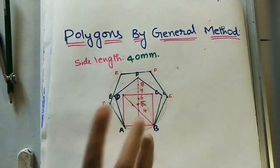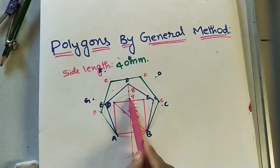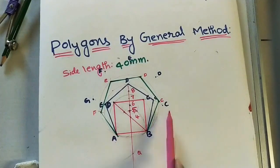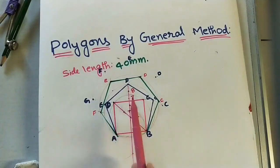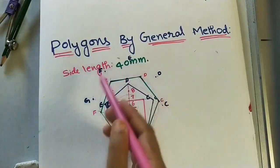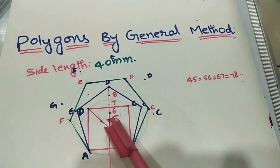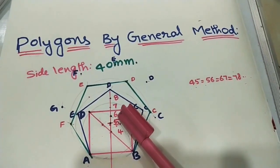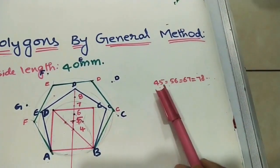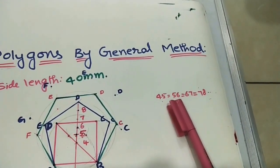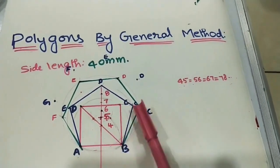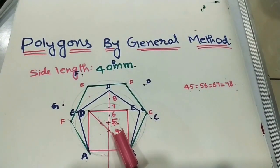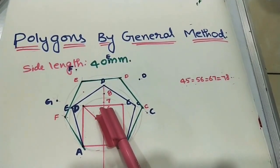After getting the hexagon, check all sides are four centimeters. Similarly, 7 as center with 7A as radius gives a heptagon, and 8 as center with 8A as radius gives an octagon. Using the perpendicular bisector line, we can construct any polygon. Remember: the distance between 4 and 5 equals 5 to 6 equals 6 to 7, and so on — these are the centers for squares, pentagons, hexagons, and beyond.